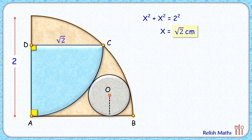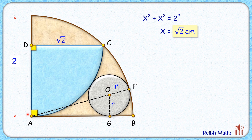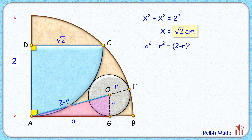Let's assume for the gray circle the radius is r centimeters. By theorem, the centers of the circles and the point of contact lie in a straight line. Here OF length is r, and AF — the radius of the bigger quadrant — is 2 cm. Thus AO = 2 − r centimeters. Letting AG = a, and applying Pythagoras theorem in triangle AOG gives a² + r² = (2 − r)². Expanding the right side using (a − b)² and cancelling r² from both sides, we get a² = 4 − 4r. This value we will use later.